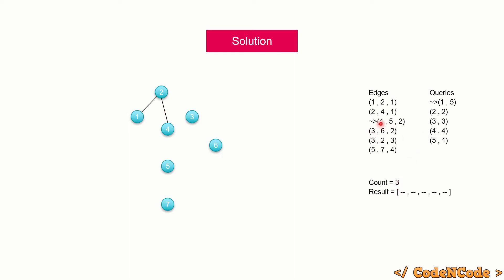The next edge has weight greater than qi = 1, so we stop. For this query we've completed processing. Count is 3, which is the answer, and we store it at position five in the result array. The three valid paths are 1-2, 1-4, and 2-4. Then we increment to the next query.